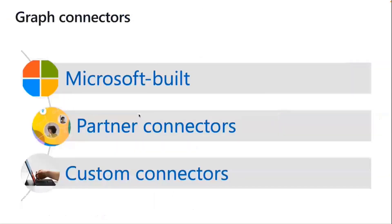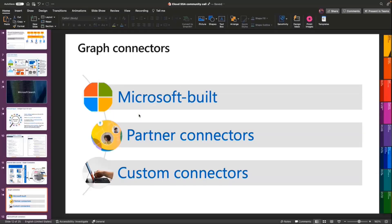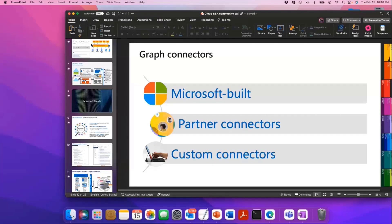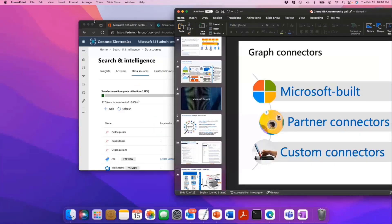Going deeper on Graph Connectors, we have three kinds: Microsoft-built connectors, partner-built connectors, and custom connectors — you can build your own as well.